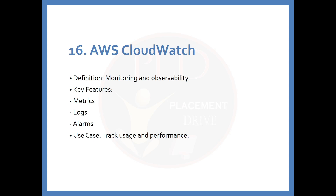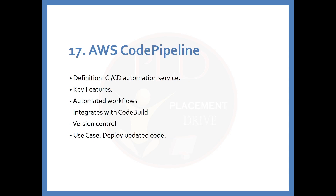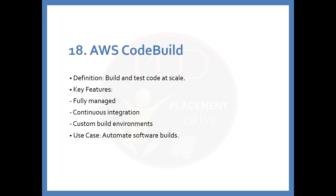The 17th service is AWS CodePipeline. The definition is: a CI/CD automation service. Key features include automated workflows, integration with CodeBuild, and version control. The use case is deploying updated code. The 18th service is AWS CodeBuild. The definition is: build and test code at scale. Key features include fully managed continuous integration and custom build environments. The use case is automating software builds.